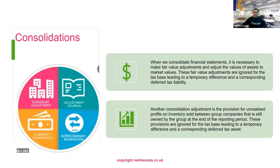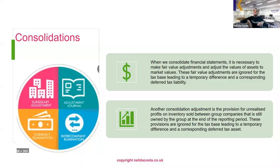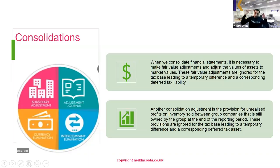Another consolidation adjustment required is the provision for unrealized profit on inventory sold between group companies. For example, if one group company sells inventory to another and makes a profit of $100,000, and the group company still owns that inventory at the end of the reporting period, we haven't sold it to a customer so we provide for this unrealized profit. These provisions are reflected in the financial statements but ignored in computing the tax base, creating a temporary difference and a corresponding deferred tax asset.